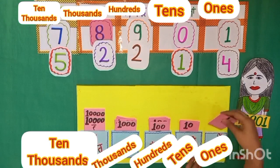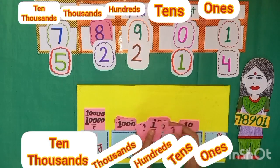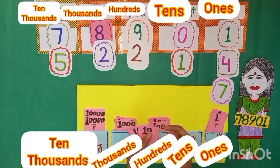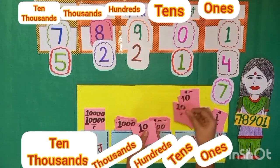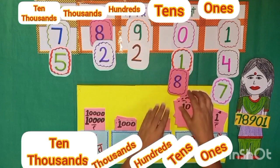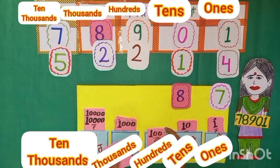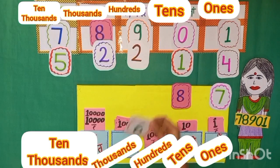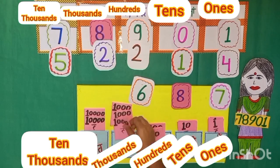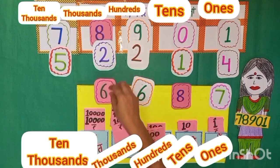Now let's count from 1 — we count 7 ones. And counting the tens: 10, 20, 30, 40, 50, 60, 70, 80 rupees means 8 tens. And counting hundreds: 100, 200, 300, 400, 500, 600 rupees means 600. And counting thousands: 1,000, 2,000, 3,000, 4,000, 5,000, 6,000 means 6,000.